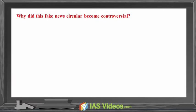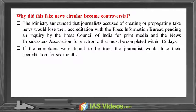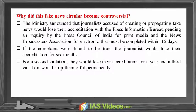Why did this fake news circular become controversial? The ministry announced that journalists accused of creating or propagating fake news would lose their accreditation with the Press Information Bureau, pending an enquiry by the Press Council of India for print media and the News Broadcasters Association for electronic media, to be completed within 15 days. If the complaint were found to be true, the journalist would lose accreditation for 6 months. A second violation would result in a one-year suspension, and a third violation would strip it permanently.